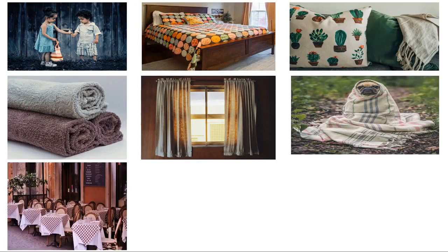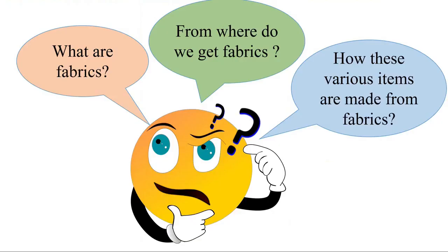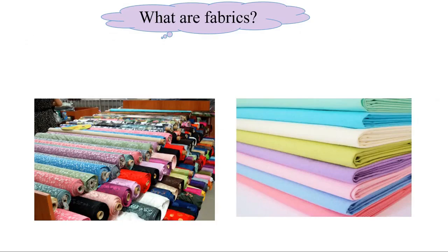Bed sheets, pillow covers, tiles, curtains, blankets, table cloths, shopping bags, and even school bags — all these items are made up of different kinds of clothing material. All of these items are made up of different kinds of fabrics. So the question arises: what are fabrics, from where do we get fabrics, and how are these various items made from fabrics?